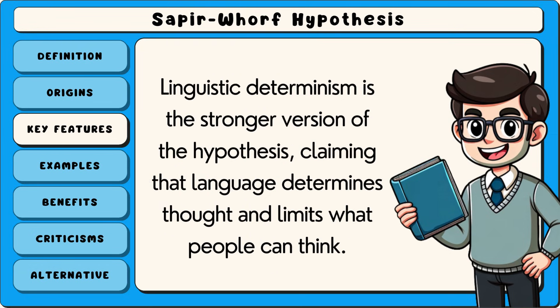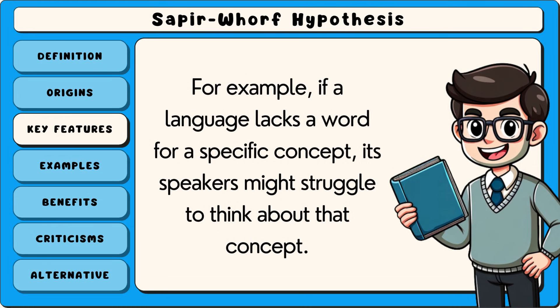Linguistic determinism is the stronger version of the hypothesis, claiming that language determines thought and limits what people can think. For example, if a language lacks a word for a specific concept, its speakers might struggle to think about that concept.